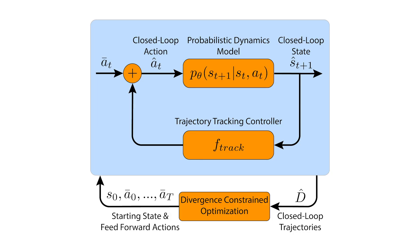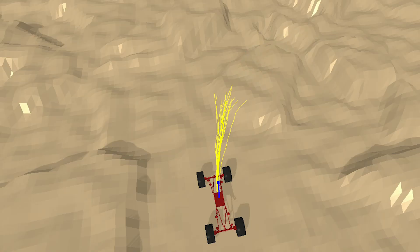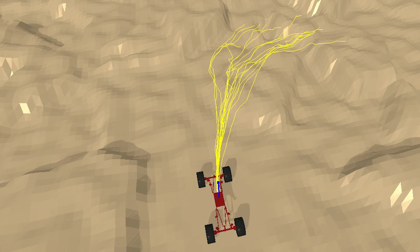We propose a divergence-constrained model-based reinforcement learning algorithm for rough terrain navigation. Our method trains a probabilistic dynamics model using a multi-step loss. This training loss considers how uncertainty propagates along trajectories. As a result, the probabilistic dynamics model can better predict trajectory distributions.